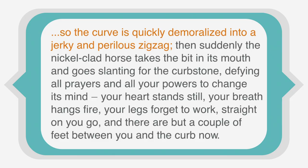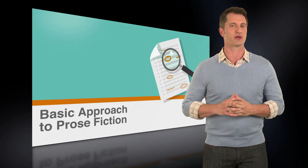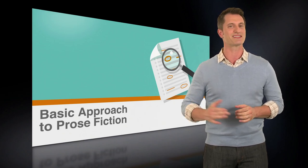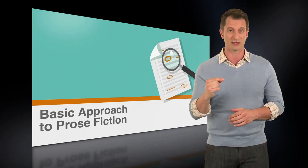So the curve is quickly demoralized into a jerky and perilous zigzag. Then suddenly, the nickel clad horse takes the bit in its mouth and goes slanting for the curbstone, defying all prayers and all your powers to change its mind. It's best to formulate an answer in your own words before looking at the choices. But since Twain is using several different devices in this passage, let's go through the answer choices using the process of elimination.